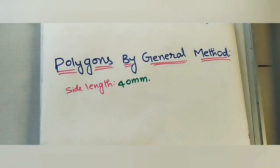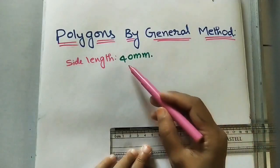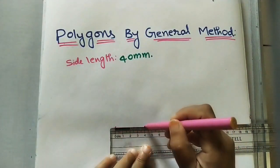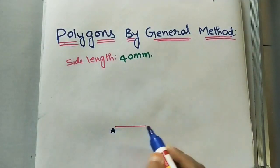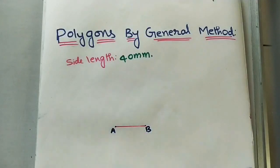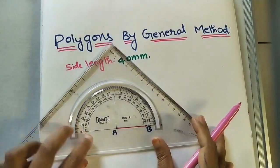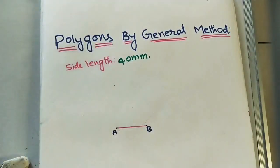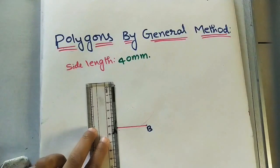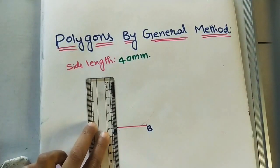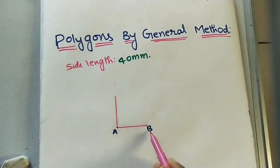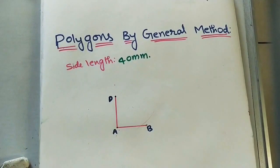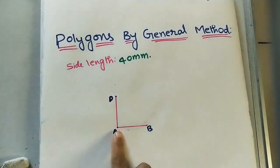First, I will build a square. Draw a line of four centimeter length and mark the end points A and B. After that, draw a perpendicular line (90 degrees) at A. The adjacent side of the polygon is also four centimeters. I am marking the points anti-clockwise: A, B, and this new point is D. So we have built two adjacent sides of the square.